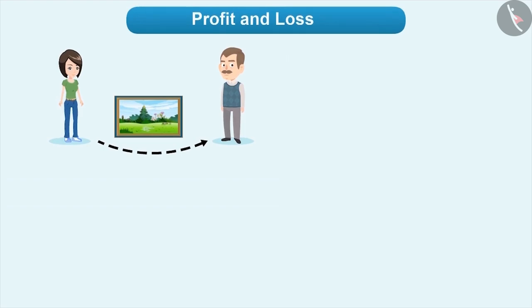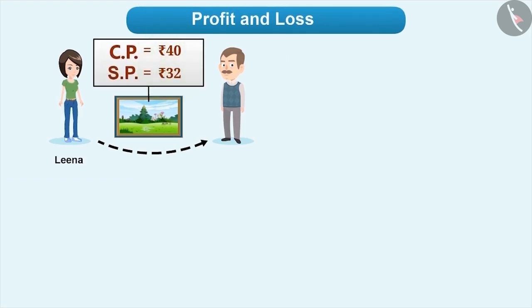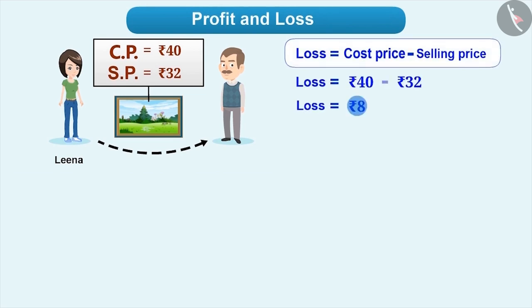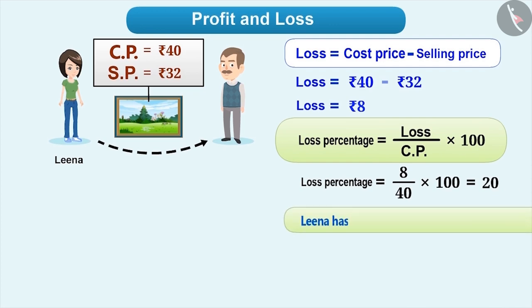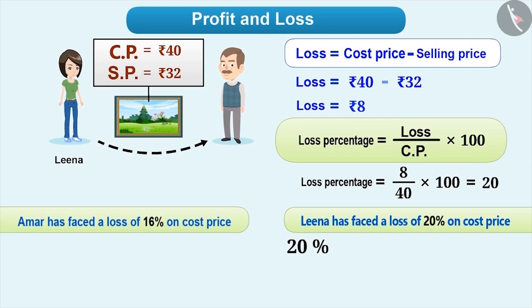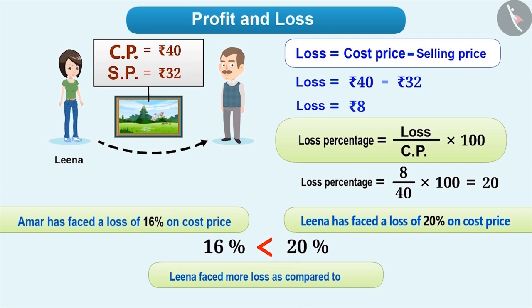Similarly, if Leena has sold 40 rupee photo frame for rupees 32, then she faces a loss of rupees 8. So loss percentage of Leena is equal to 8 by 40 into 100, which is equal to 20. So Leena has faced a loss of 20% on the cost price. Now, 20% is greater than 16%, so Leena has faced more losses compared to Amar. Thus, by expressing profit or loss in percentage, we can easily understand them and we can compare them correctly.